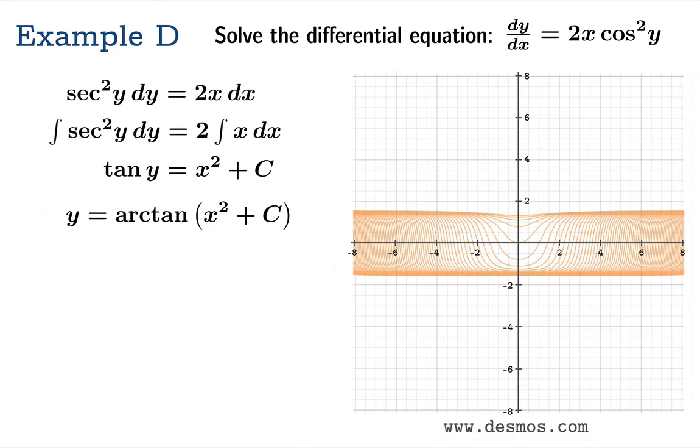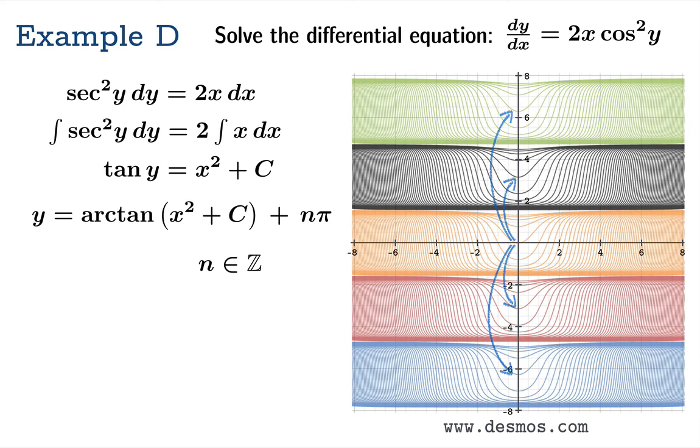That means y equals arctan of x squared plus c isn't the only solution. We should be able to add on integer multiples of pi onto that solution and get other solutions. Once again using Desmos, you can create these quite quickly. And there, that looks like a foliation of the plane. By choosing various values of c and various integers n, you're going to get a whole bunch of different possible solutions.